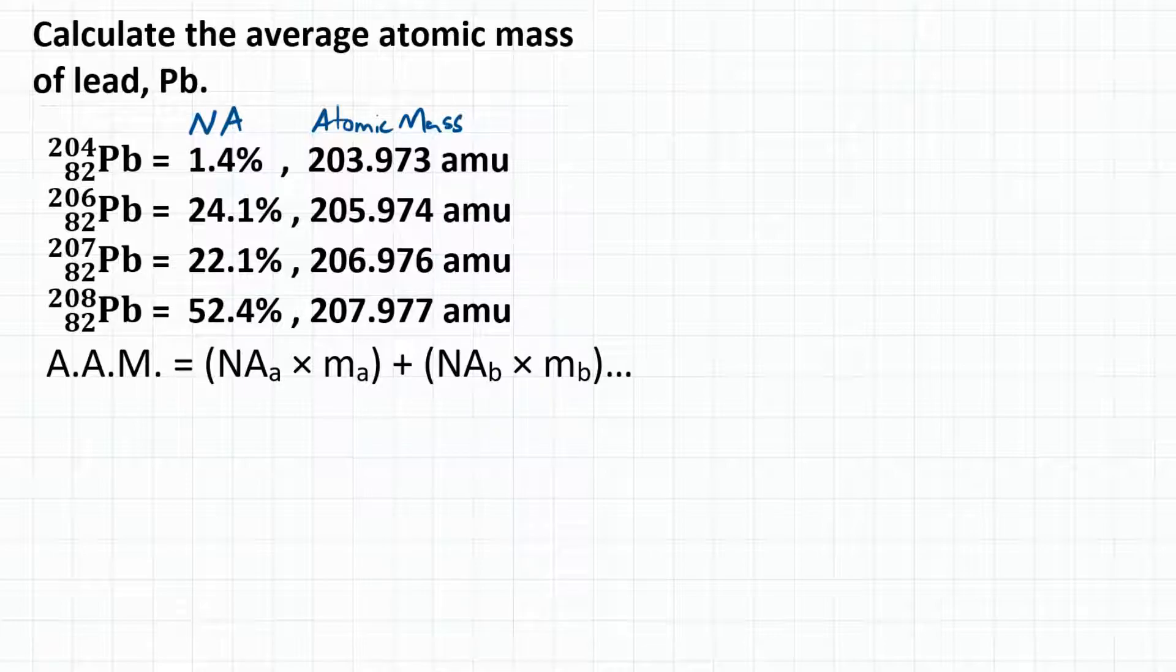For our equation to calculate average atomic mass, we're going to take that natural abundance and multiply it by the atomic mass for each isotope, and then add those all together.